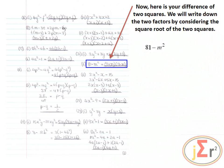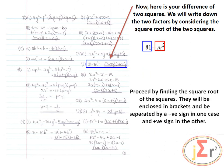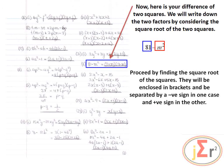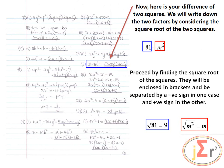Here is your difference of two squares: 81 - m². We write the two factors by finding the square roots. The square root of 81 is 9, and the square root of m² is m. They are enclosed in brackets and separated by a negative sign in one case and a positive sign in the other: (9 + m)(9 - m).